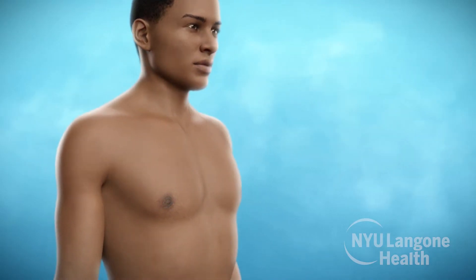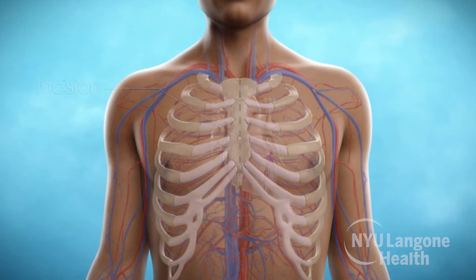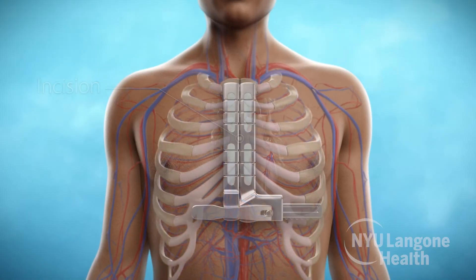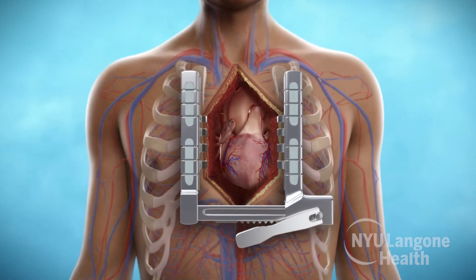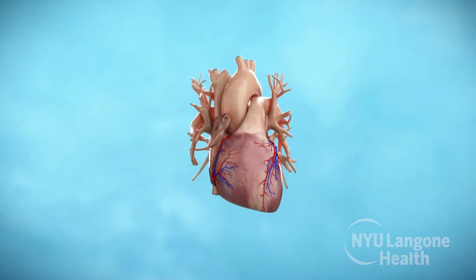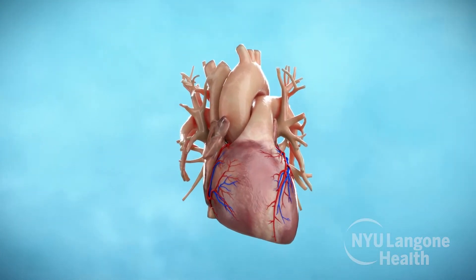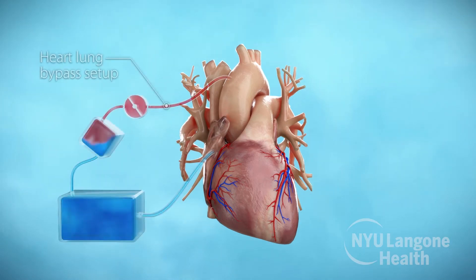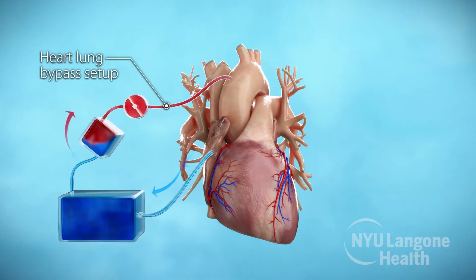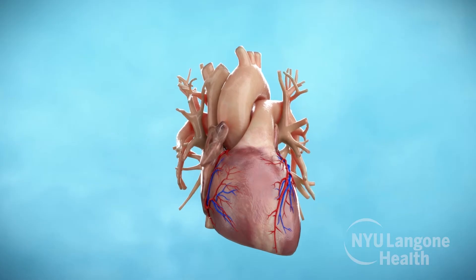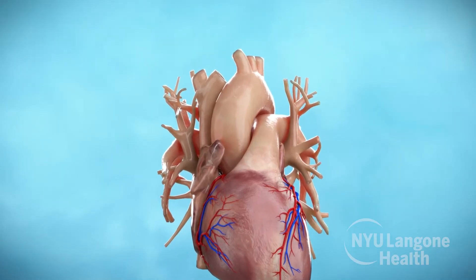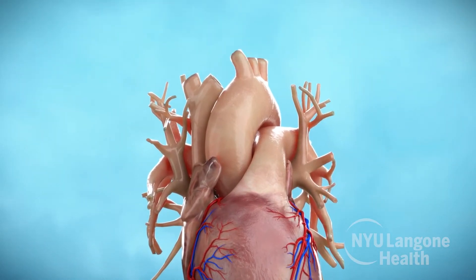Once the surgical plan is confirmed, the surgeon makes an incision in the middle of the chest. The breast bone is opened, allowing the surgeon to access the heart. Medication is used to stop the heart from beating during the procedure. A heart-lung bypass machine takes over the work of your heart during the surgery, allowing surgeons to operate safely. With the heart still and accessible, the surgeon begins the septal myectomy procedure.